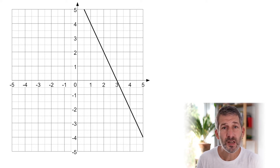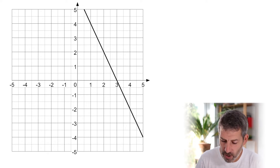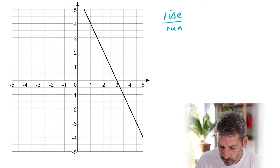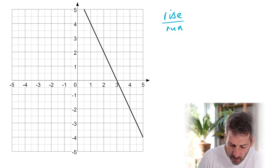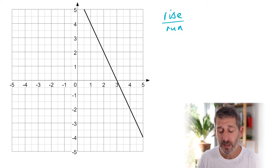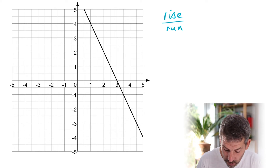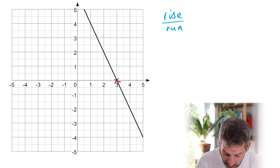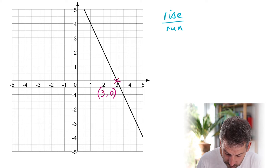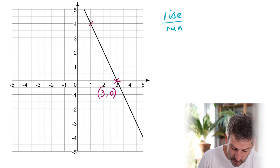We talk about rise over run — we're going to compare the change in the x-coordinates with the change in the y-coordinates. We're going to choose two points on this line; any two points will work, but let's choose ones that make our lives nice and easy, where we can easily read off the coordinates and get nice easy numbers. I'm going to go for this point here, which is 3, 0, and this point here, where the coordinates are 1, 4.